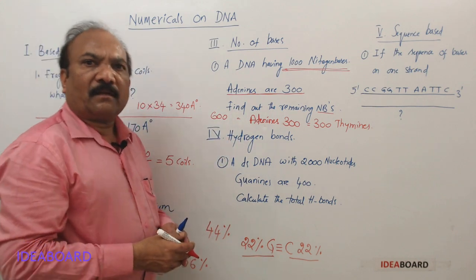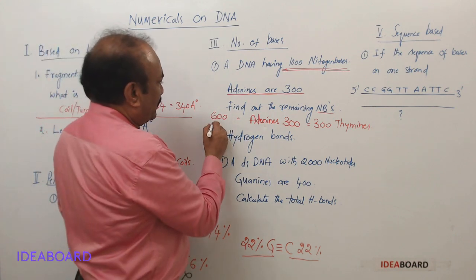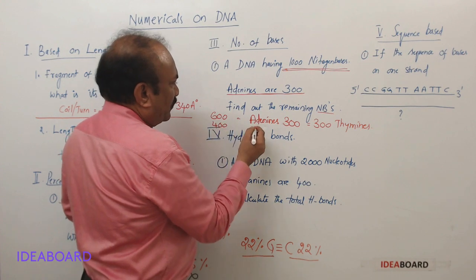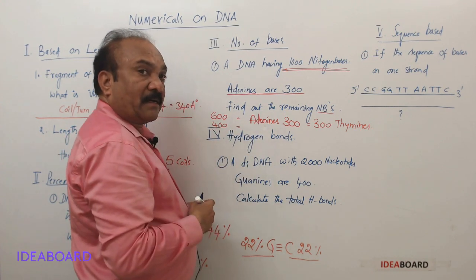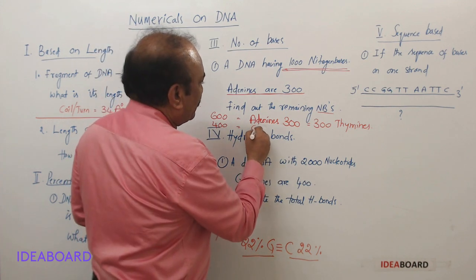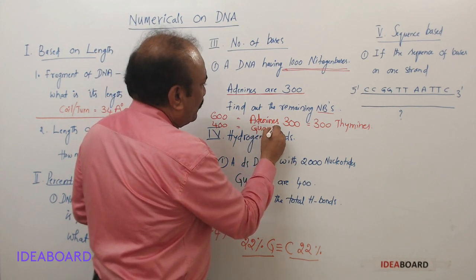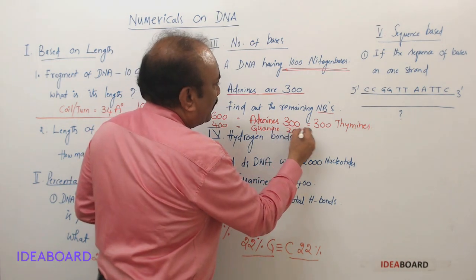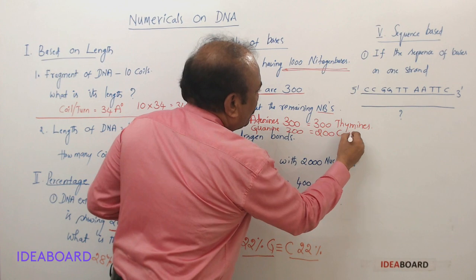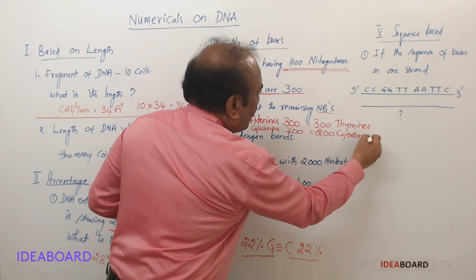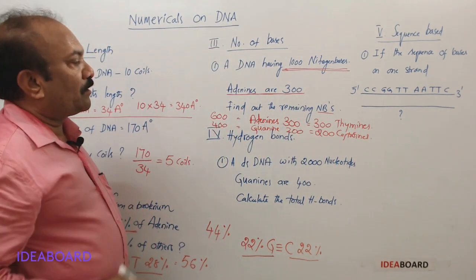The total number of nitrogen bases are 1000, and we got here 600. How many are left? 400. Very easy. So now let us distribute these 400 among the guanine and cytosine: guanines will be 200 and cytosines will be 200. This is based on number.